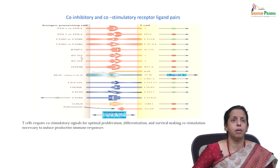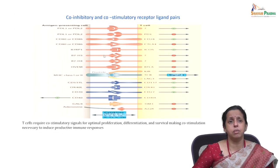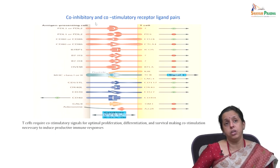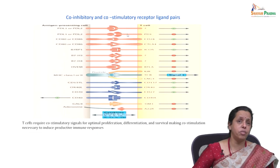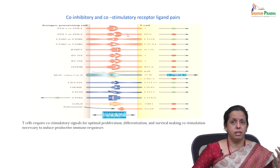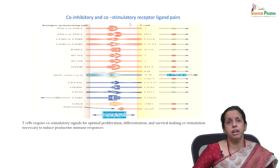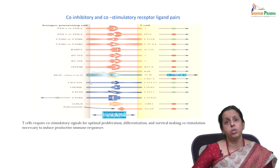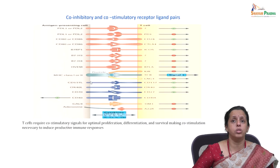This table covers the different co-inhibitory molecules on the antigen presenting cell side and on the T cell side. T cells require co-stimulatory signals for optimal proliferation, differentiation, and survival, making co-stimulation necessary to produce an immune response. Cancer immunotherapy received major breakthroughs after the establishment of co-stimulatory receptor-ligand pairs.